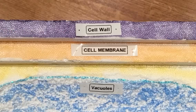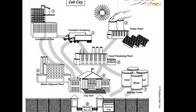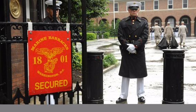The cell membrane, like gate security at the city entrance, controls the input-output interactions of the cell and dictates what particles may enter and what particles may exit, through a process called selective permeability.